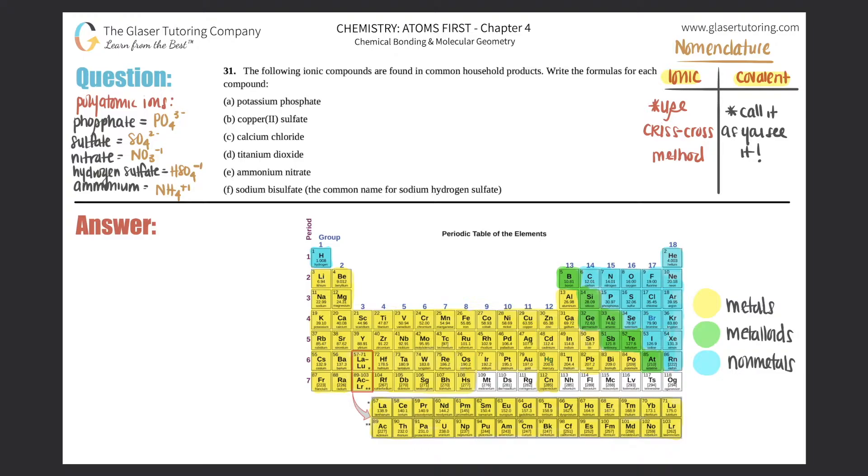Number 31: The following ionic compounds are found in common household products. Write the formulas for each compound. All right, so basically they're saying that they're all ionic, so chances are we're going to have to use the crisscross method. Now there are household common names, which means that they might not follow the standard nomenclature that we have been talking about thus far. But if that's the case, I'll let you guys know when that happens.